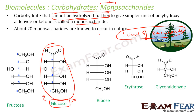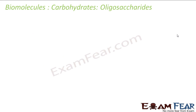There are almost 20 monosaccharides that are known to nature — not many, only about 20. In all of nature, there are approximately 20 monosaccharides. The next category is oligosaccharides.